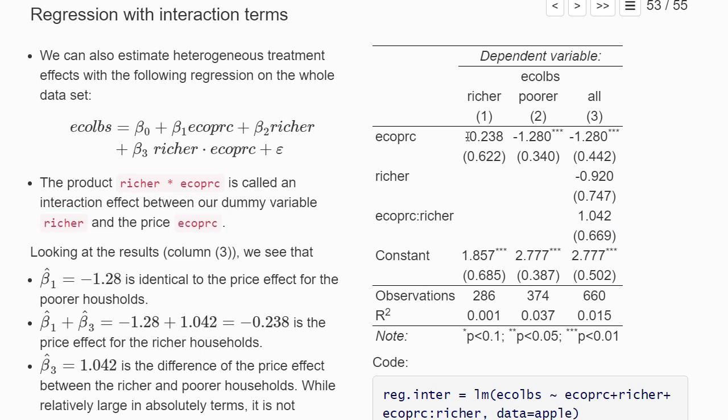And we really could not see by the separate regression whether the differences are significant or not. So this is an advantage of this regression with the interaction terms. Even so, it takes a bit more training and thought to interpret these coefficients.